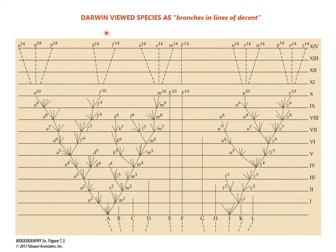None of this is new. Darwin published a figure from the Origin of Species illustrating that species were sort of branches in lines of descent. Instead of a species being an endpoint or a stationary node, species were the vehicle of change throughout evolutionary time and throughout the overall tree of life.